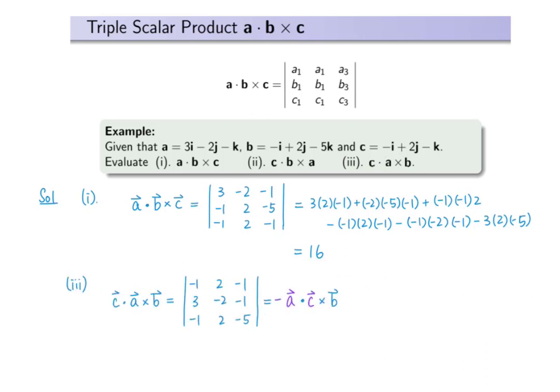Finally, to compute C dot A cross B, we can first interchange C with A to get negative A dot C cross B. Then we can interchange C with B to get A dot B cross C. Since we have performed interchanging two times, C dot A cross B is the same as A dot B cross C, which is 16.